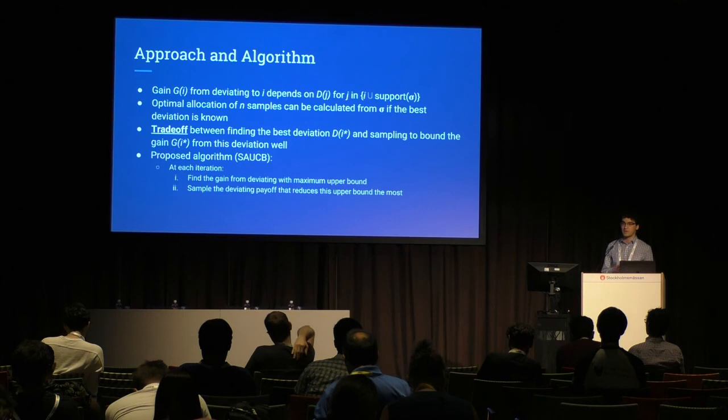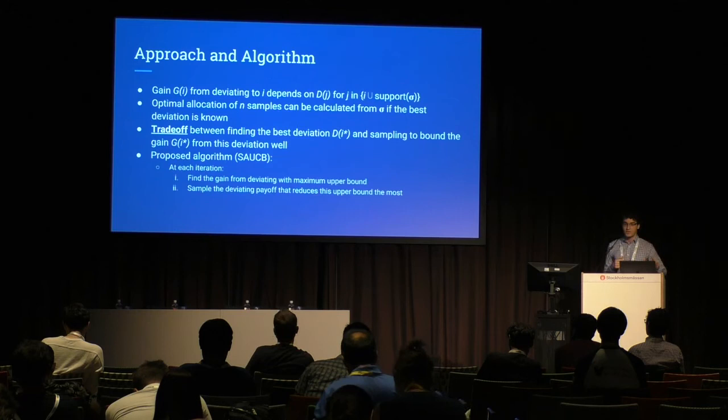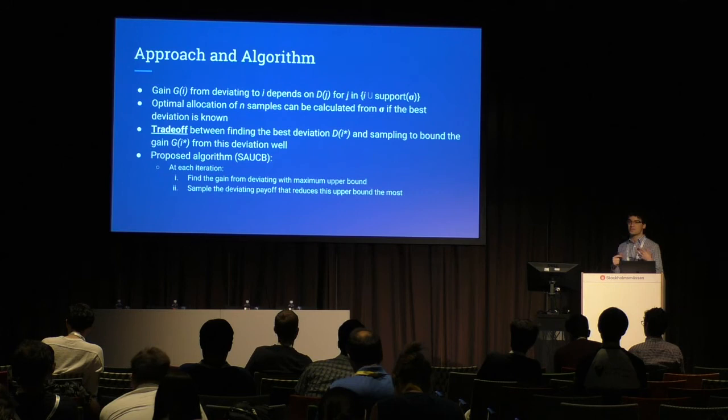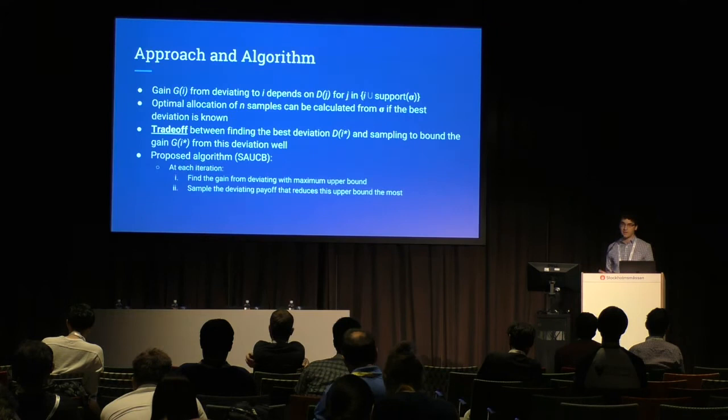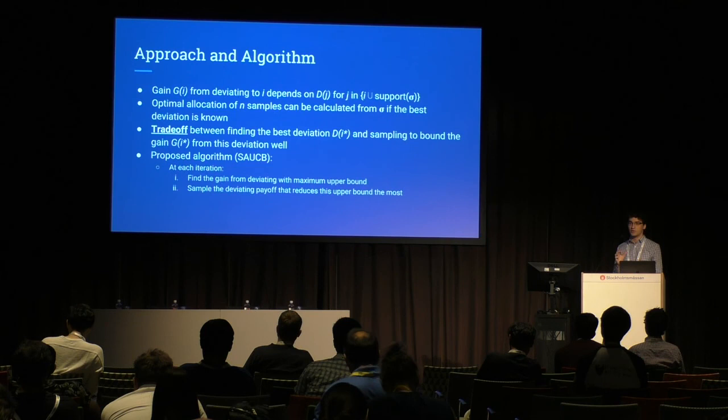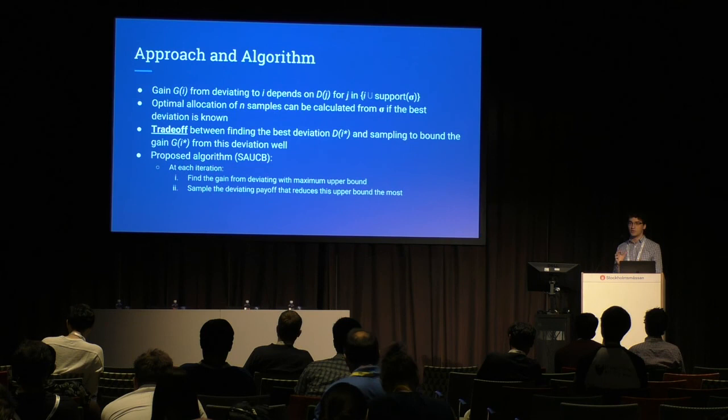If we knew the best deviation, we could calculate the optimal distribution of samples. So there's a tradeoff between finding the best deviation and sampling to get a tight upper bound. Our proposed algorithm is a UCB-style algorithm that finds the deviation gain with the maximum upper bound at the current time step, then samples the payoff that reduces this upper bound the most — intuitively combining UCB-style exploration with optimal sample allocation. We've run results on toy experiments and our algorithm performs closely to the optimal allocation. For more details, please come see our poster.